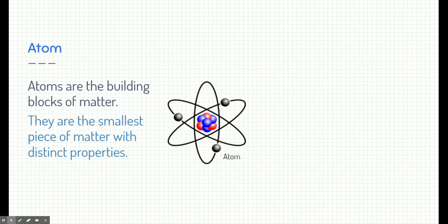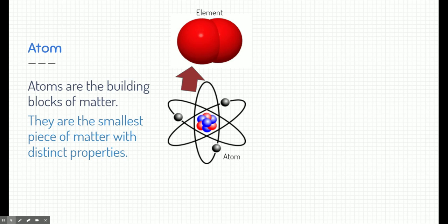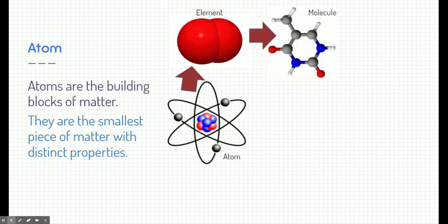Matter revolves around atoms because atoms are the building blocks of matter. I like to think of atoms kind of like Legos — they build up all things that are made of matter. They are the smallest piece of matter with distinct properties. Take a few atoms, put them together and you get elements. Take a few elements and you put them together and you get molecules. This is what we're going to be talking about in chemistry. From this point, you can really build anything.